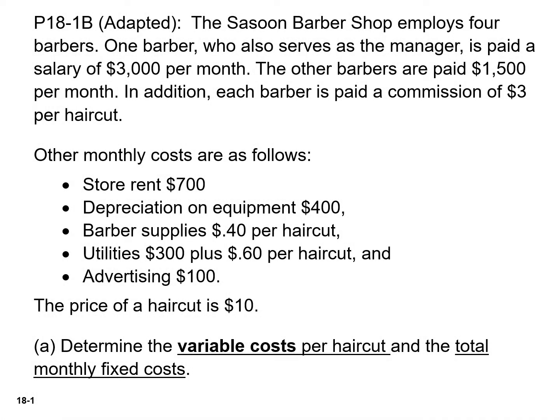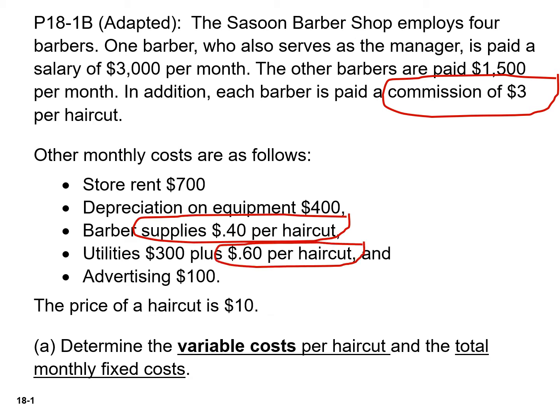The first thing you have to determine is the variable cost per haircut. We need to include the commissions of $3, the barber supplies of $0.40, and the utilities of $0.60. So our variable cost per unit is $4.